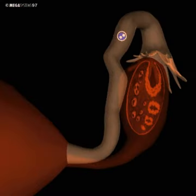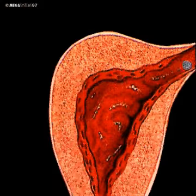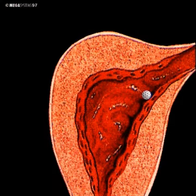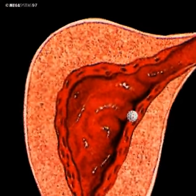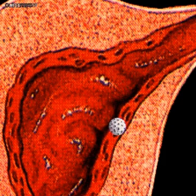On its four to five day journey through the fallopian tube towards the womb, the organism divides itself roughly five more times, arriving at the uterus at about the 16th cell stage. There it implants itself in the lining of the womb.